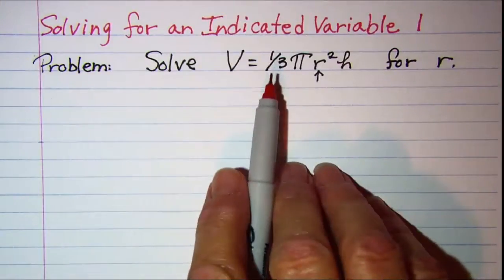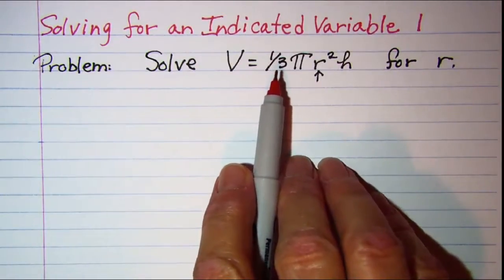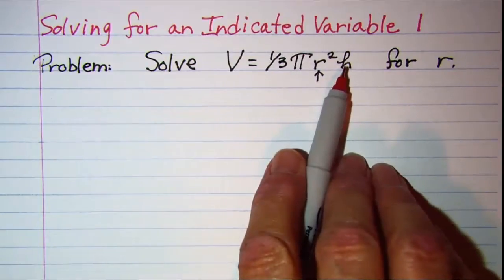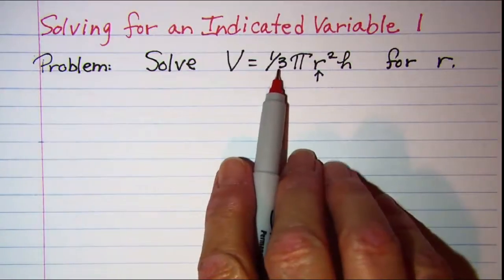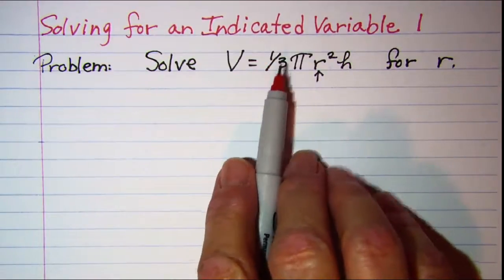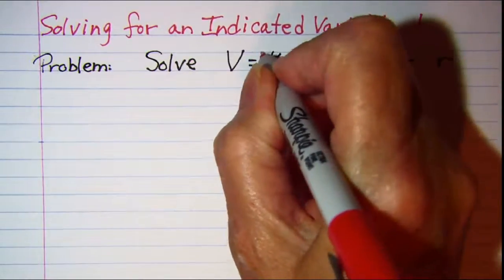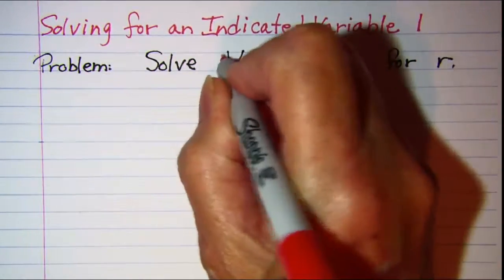So my first thing that I'm going to do, instead of just dividing by all of these factors since they're multiplied, I'm going to remove this one-third factor first by multiplying both sides of the equation by 3.